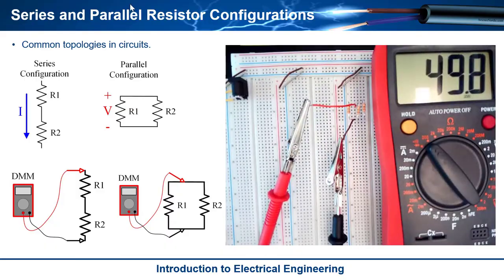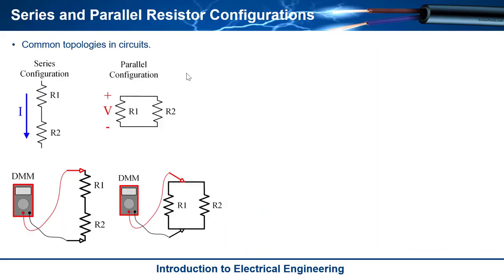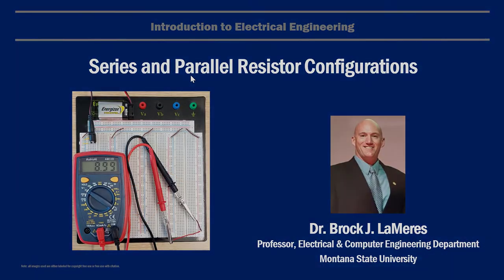All right, that is it. That is basically series and parallel resistor combinations. That's how you would measure the equivalent resistance of them for both configurations using a multimeter. And that is it. See ya.